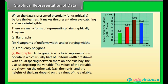Bar graph: A bar graph is a pictorial representation of data in which bars of uniform width are drawn with equal spacing between them on one axis — say the x-axis — depicting the variable. The values of the variable are shown on the other axis — say the y-axis — and the heights of the bars depend on the values of the variable.